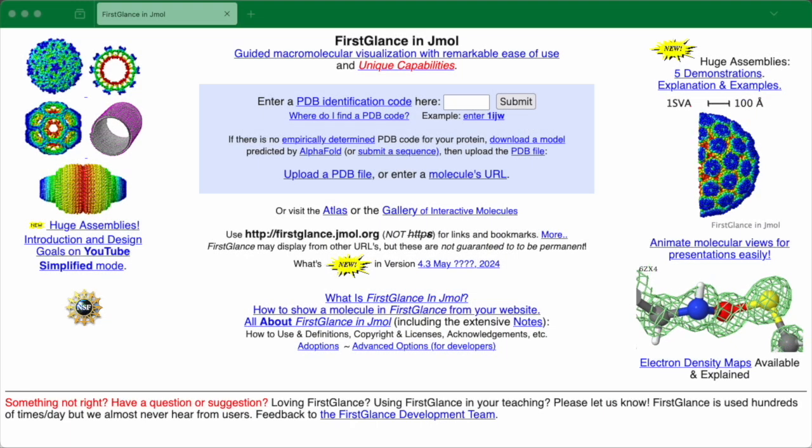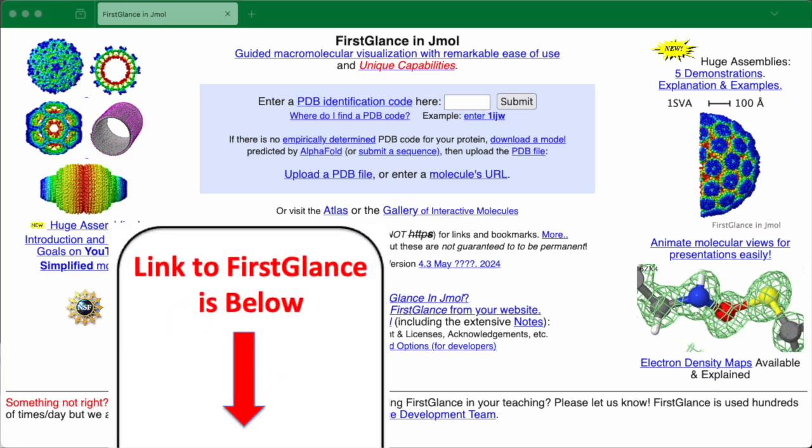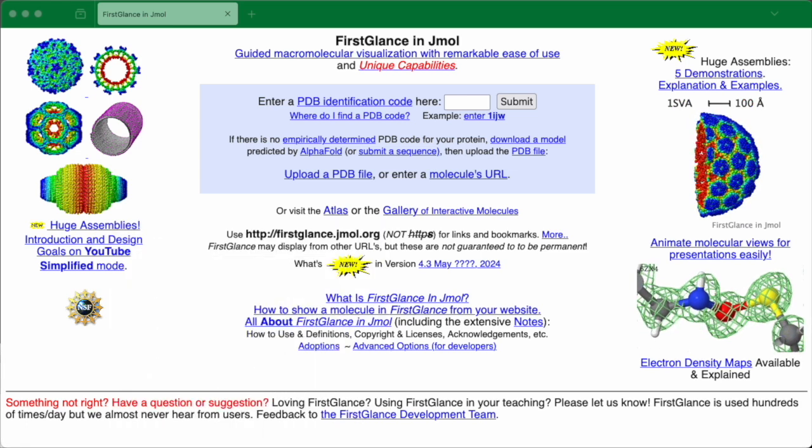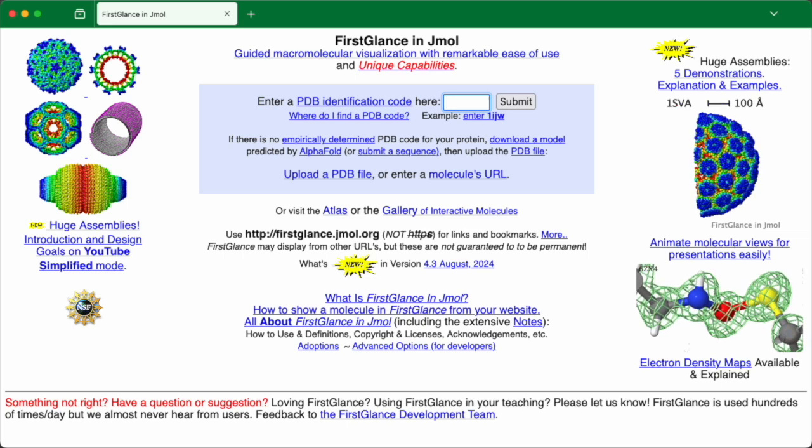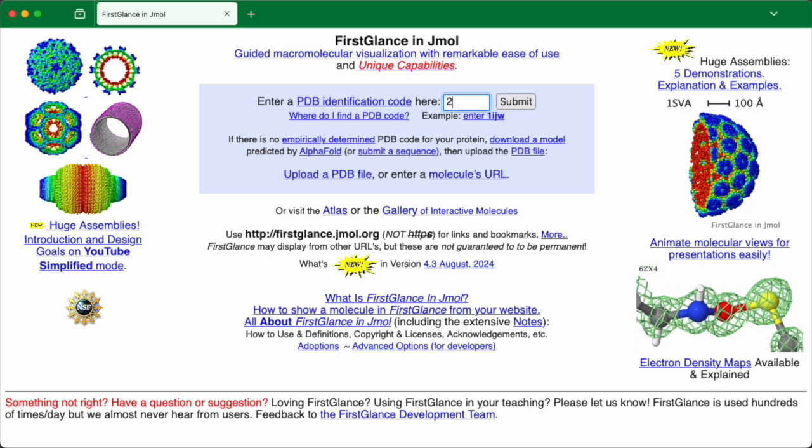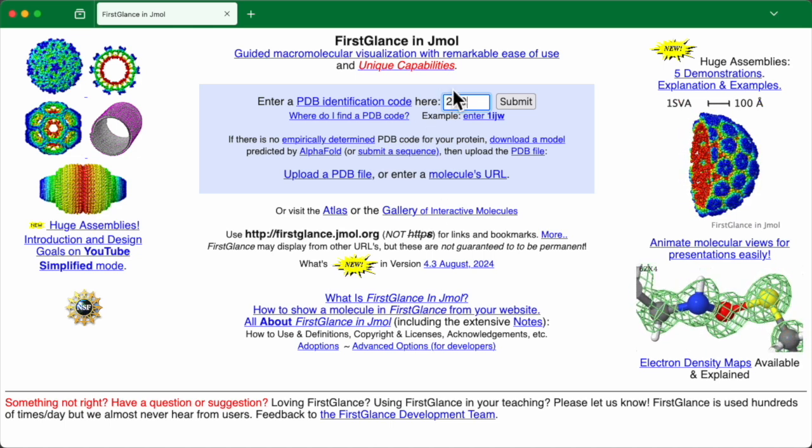This is the front door to FirstGlance. Use the link down below this video to find FirstGlance and then bookmark it. Our example will be 2xi9. So I'll enter 2xi9 in the slot right here and press Enter.